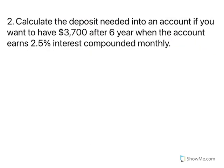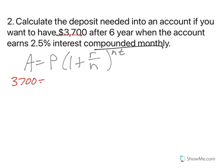Now let's change our... We're going to still do a compounded problem, but we're going to go monthly. So again, think through your formula. A equals P1 plus R over N raised to the N times T. Let's plug in what we know. We want to have $3,700 after six years when the account earns 2.5% interest compounded monthly. So we want to have $3,700. We don't know the initial amount.